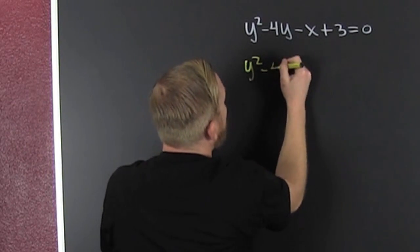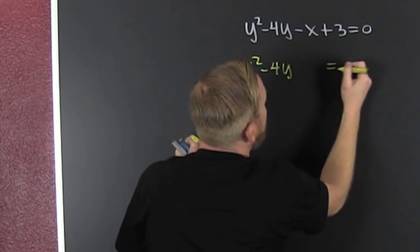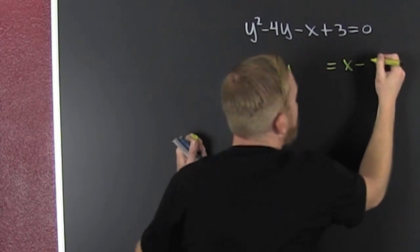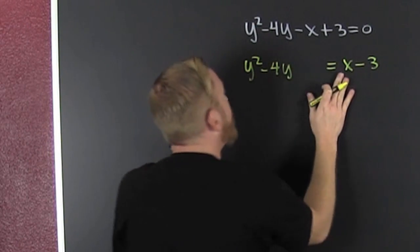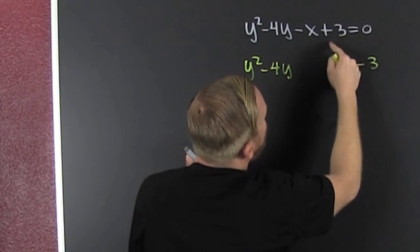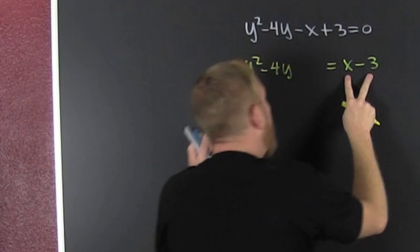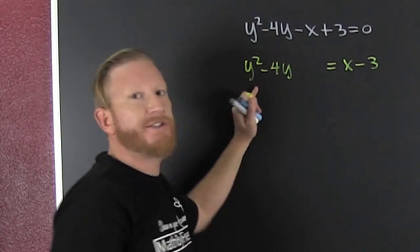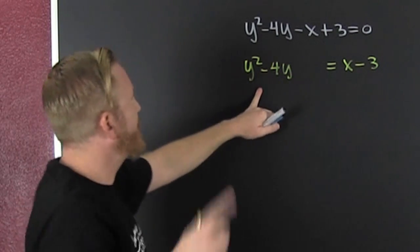So that's y squared minus 4y equals x minus 3. By the time you're at this level, you're a Jedi. Just move that with your eye.